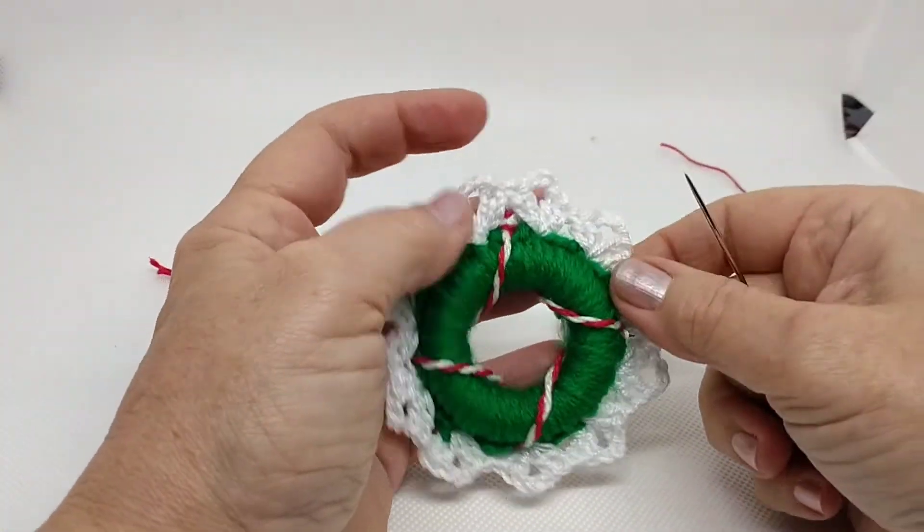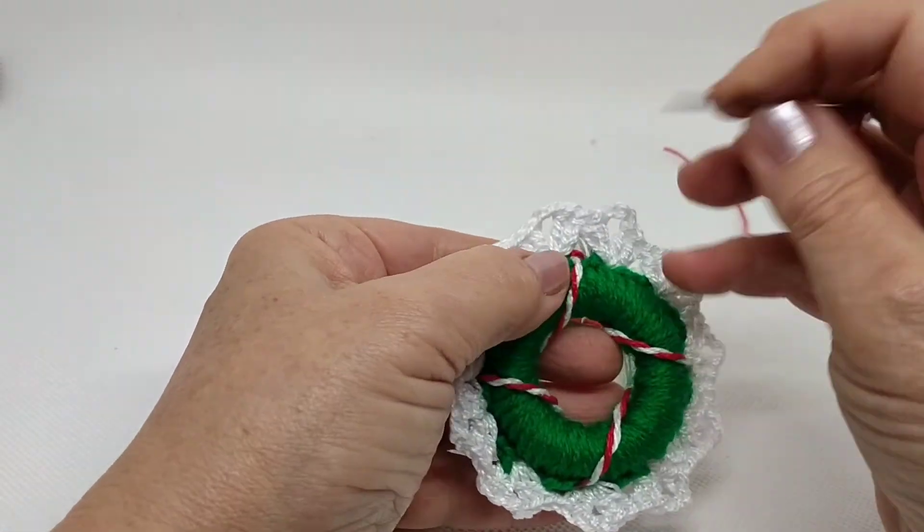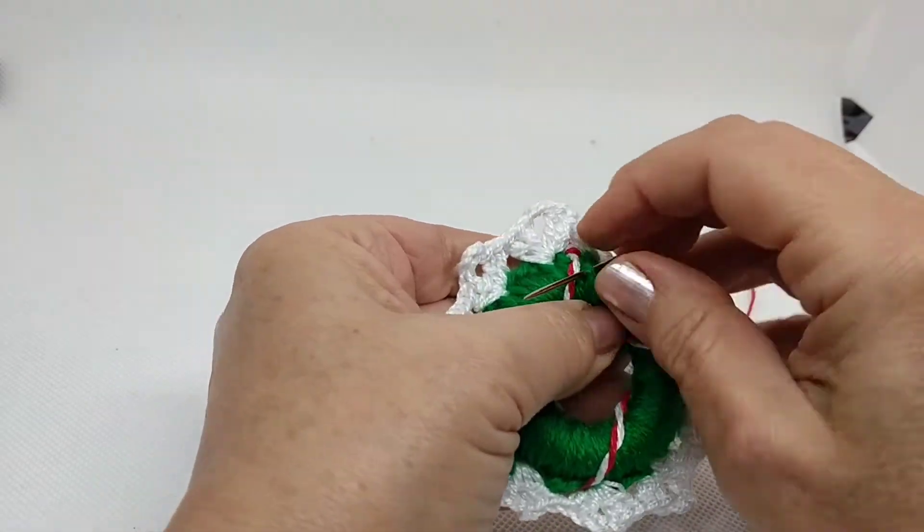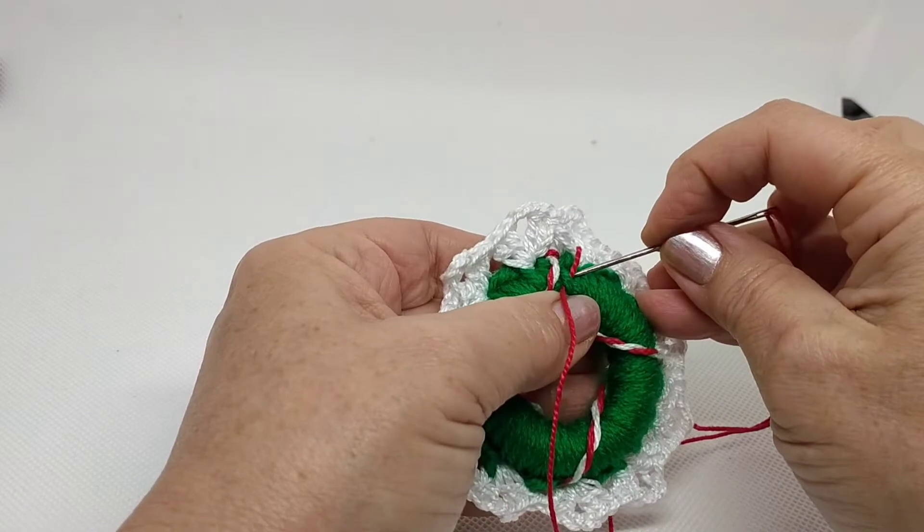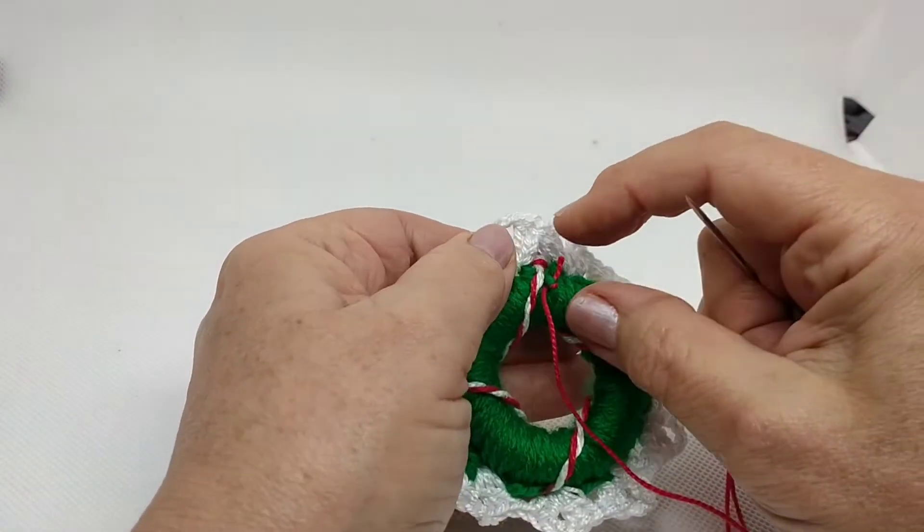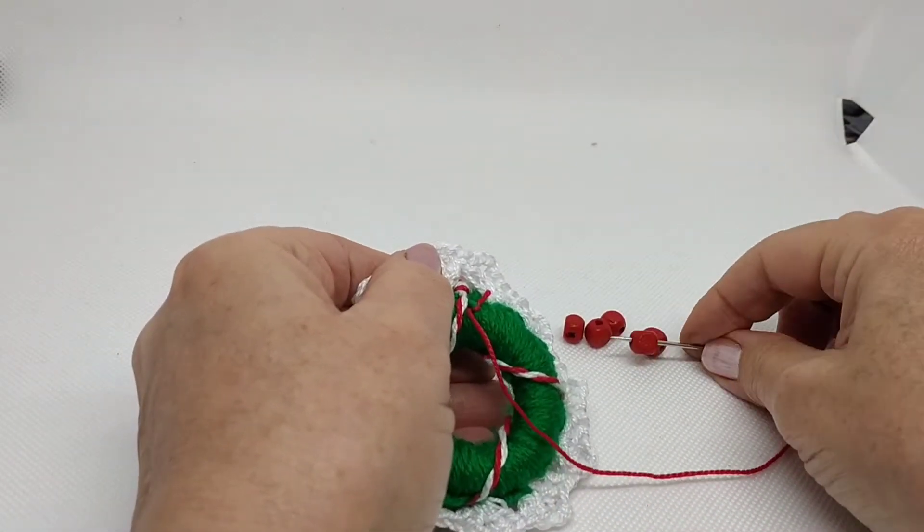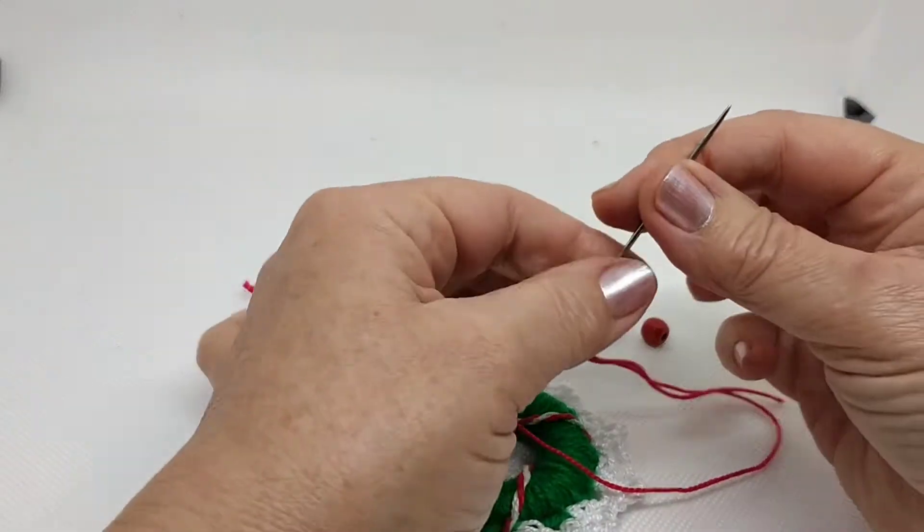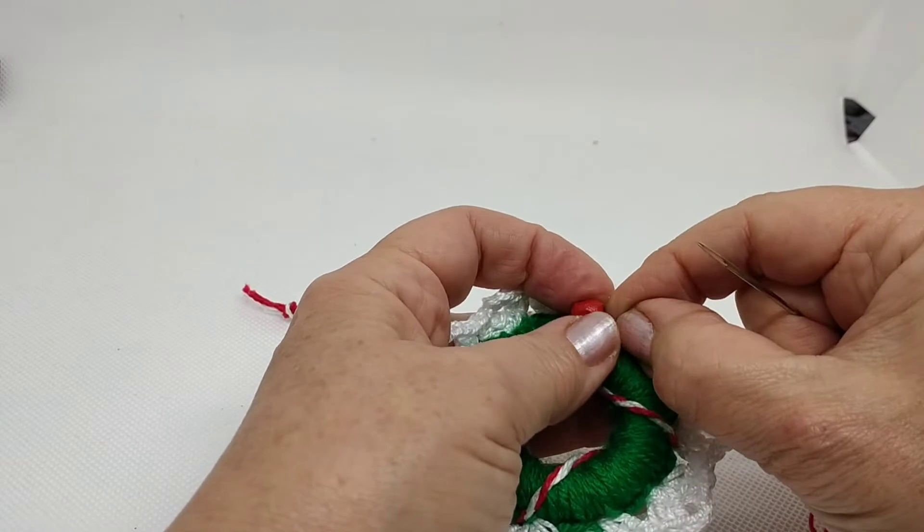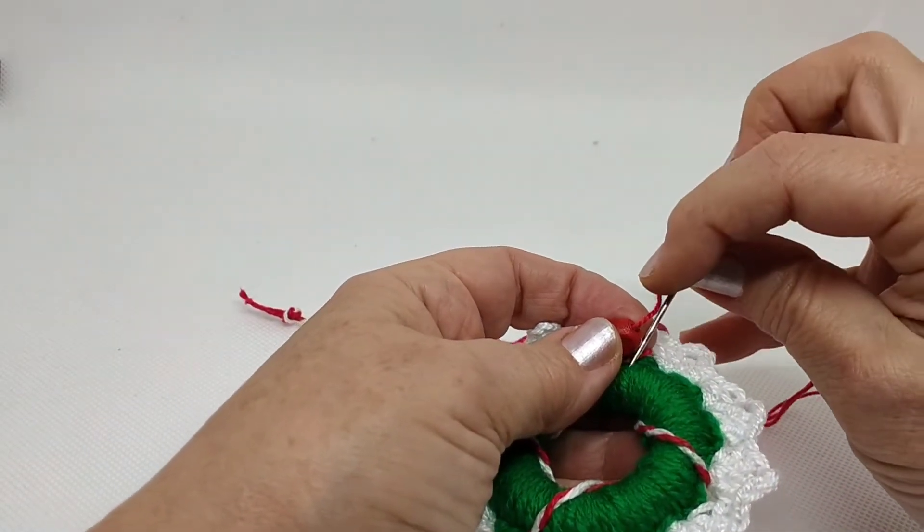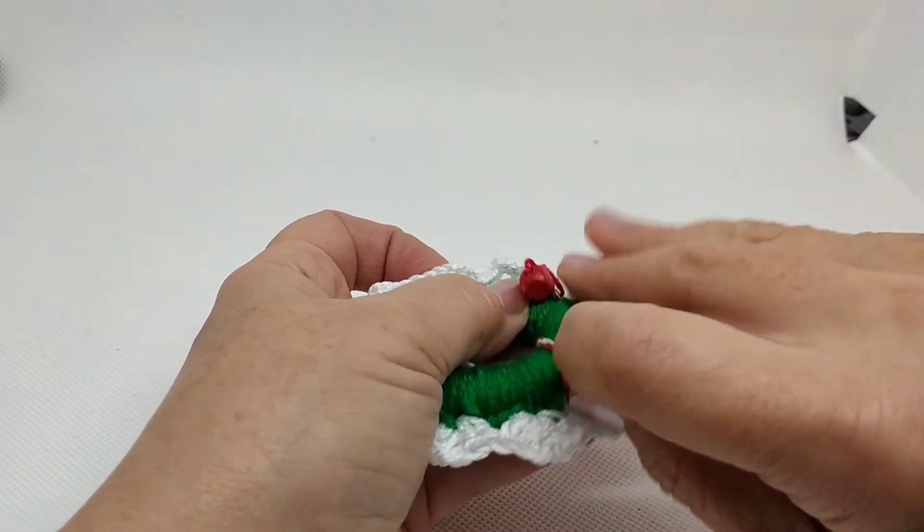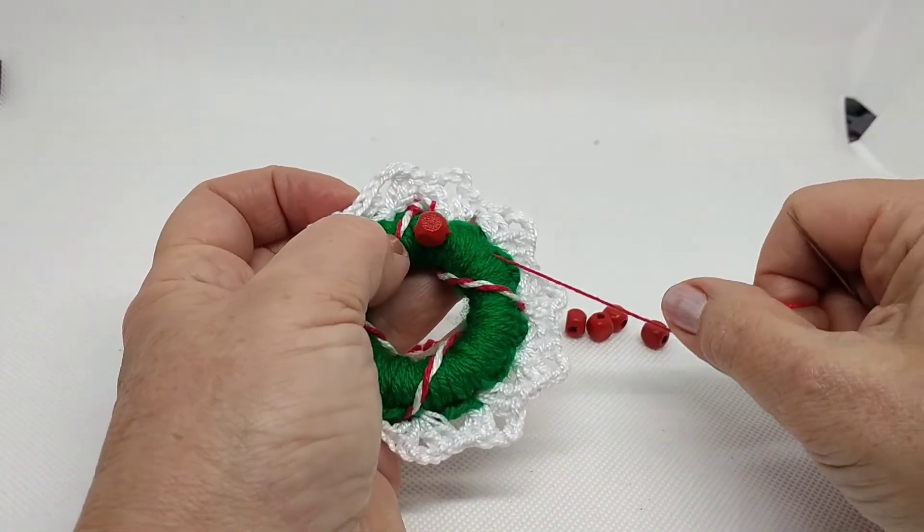Ahora vamos a ponerle las bolitas, las cuentas rojas que tenemos. Vamos a pinchar aquí como a la mitad y vamos a ajustar aquí para que no se nos vaya. Pinchamos nuestra cuenta y la vamos a poner aquí. Pasamos por dentro de los hilos hasta llegar al siguiente punto donde vamos a colocar nuestra siguiente cuenta.